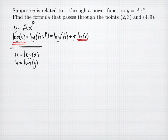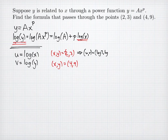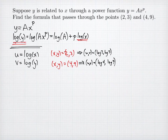We need to transform our original coordinates. The point (x, y) = (2, 3) becomes (u, v) = (log 2, log 3), and the point (x, y) = (4, 9) becomes (u, v) = (log 4, log 9). In our transformed coordinates, we have a linear shape, so we're going to need a slope.